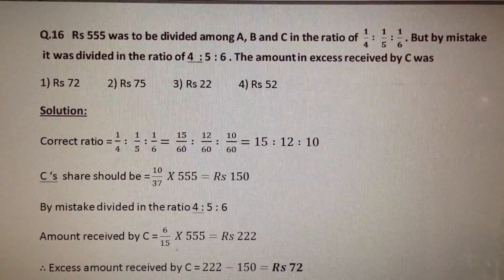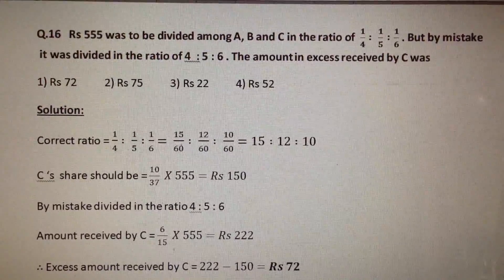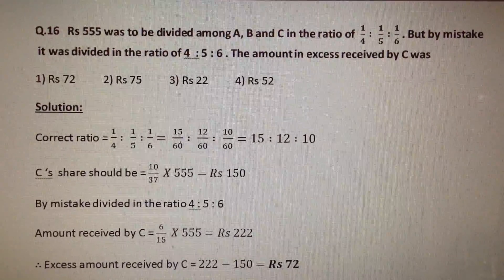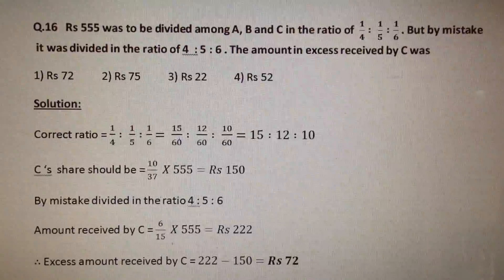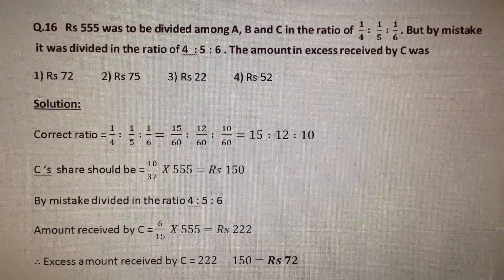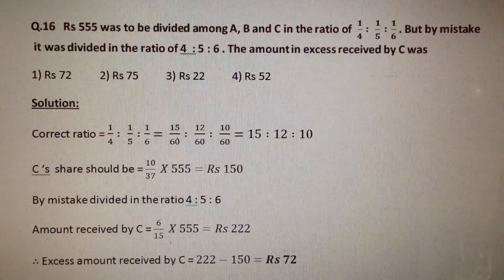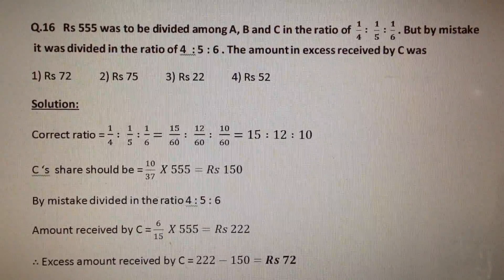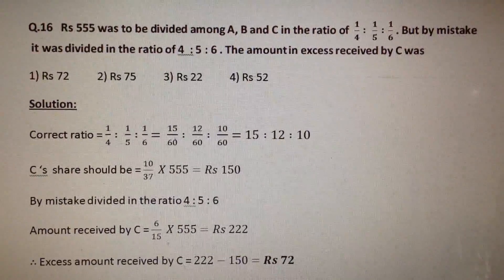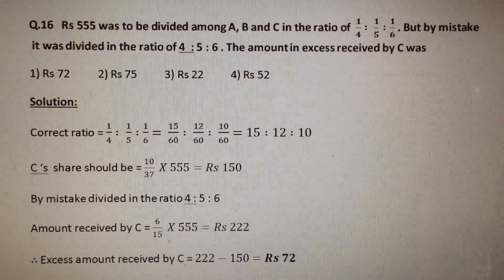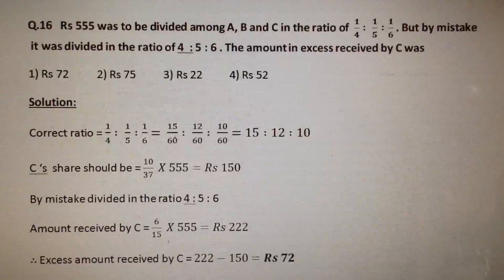Rs. 555 was to be divided among A, B and C in the ratio of 1/4 : 1/5 : 1/6. But by mistake, it was divided in the ratio of 4 : 5 : 6. The amount in excess received by C was?